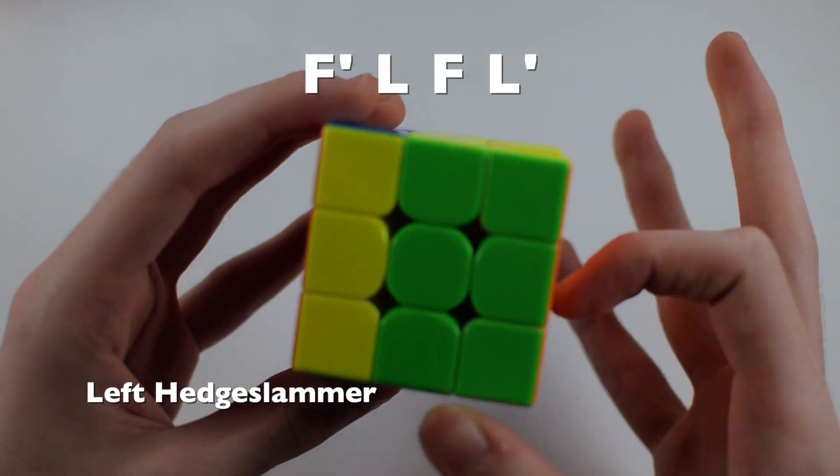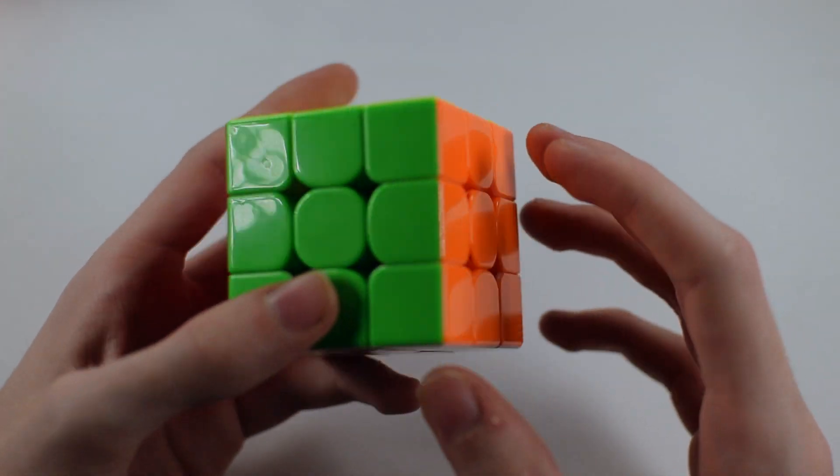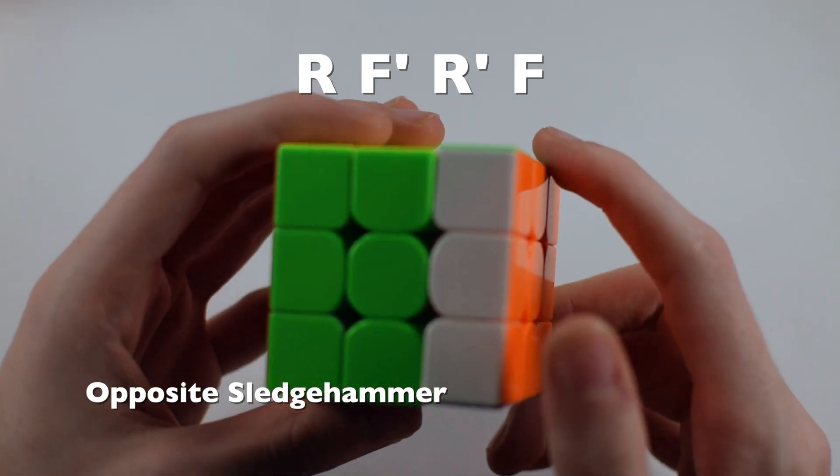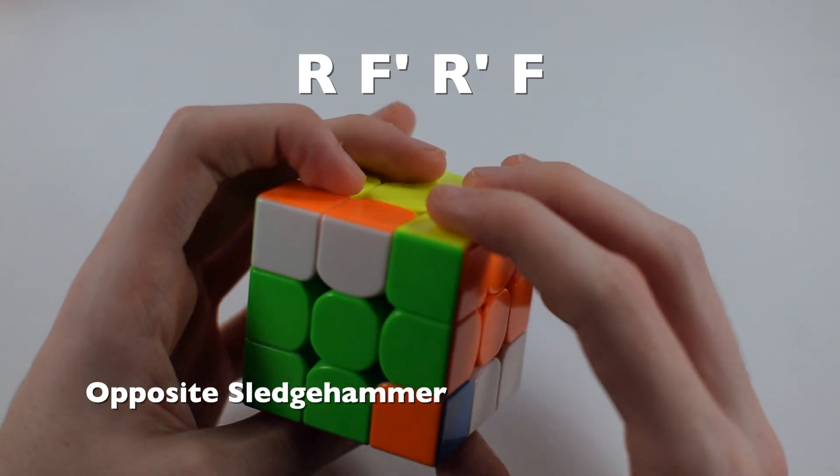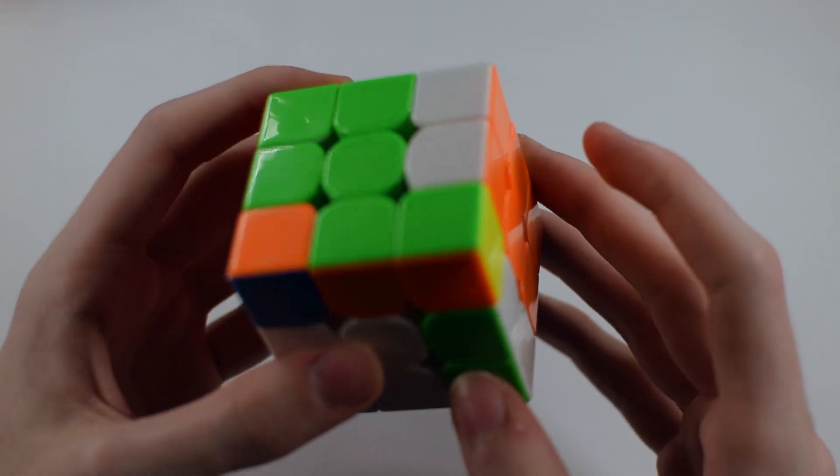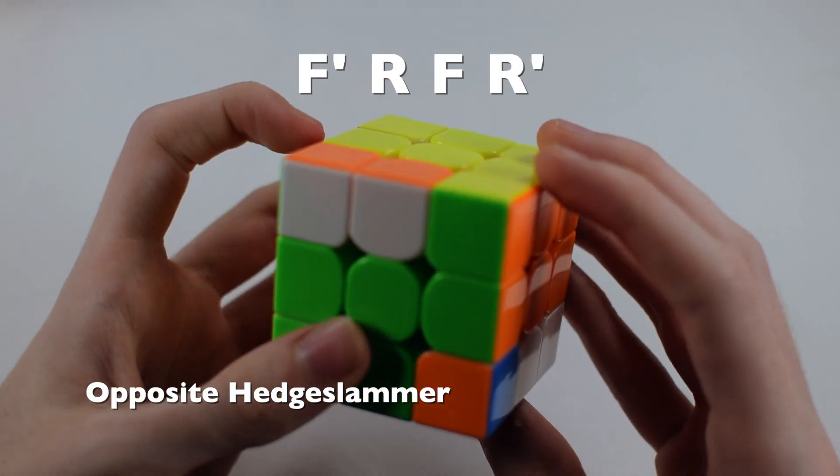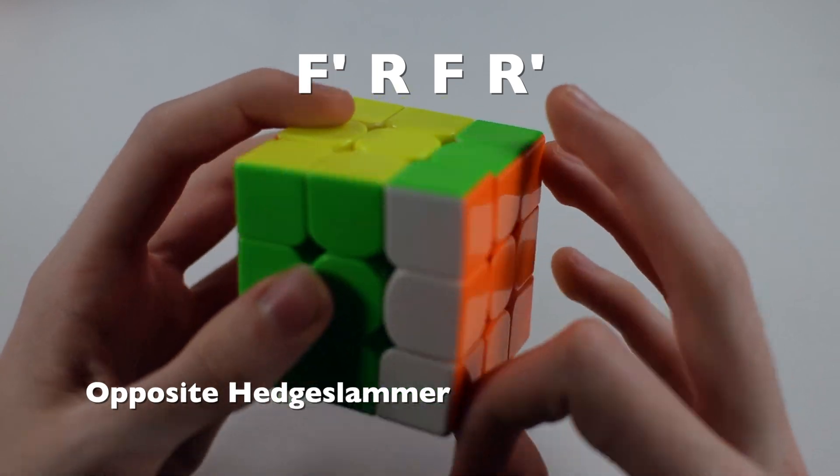Left hedge slammer is F' L F L'. Then there is opposite of sledgehammer and this one is R F' R' F. Then there is the opposite of hedge slammer which is F' R F R'.